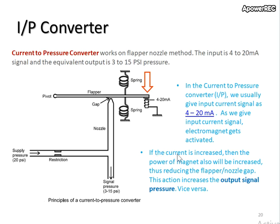So if the current is increased, then the power of the magnet will also be increased, and therefore the gap will be closed. This action increases the output signal pressure, vice versa.